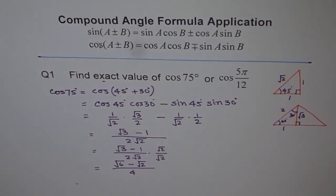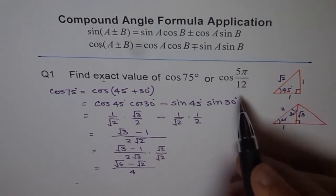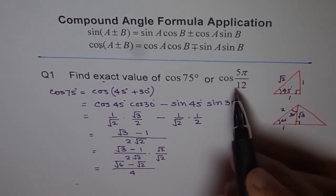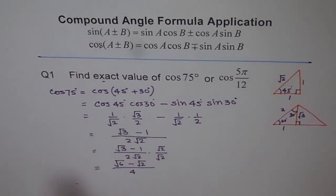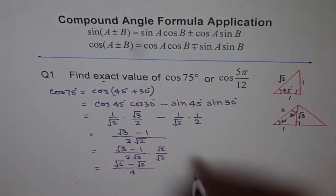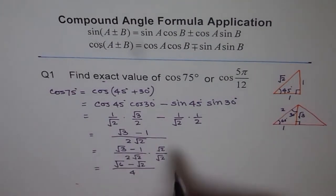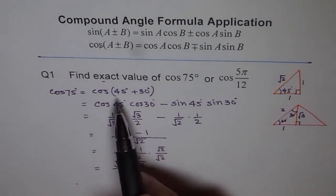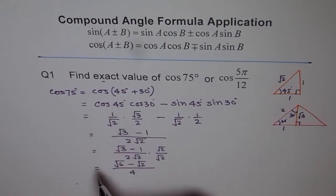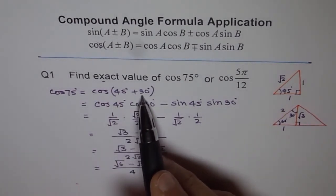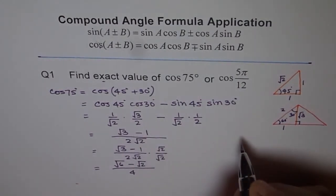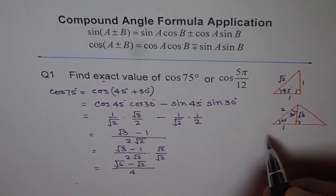Now, if you are doing it in radians, then how are you going to write cos 5π/12 in terms of these angles? So, let's try to think this. Rest all is exactly the same. Well, since you know it is this, you could say, well, it is π/4 plus π/6. That gives you the answer, right? So, that is how it is.